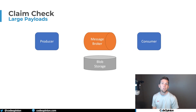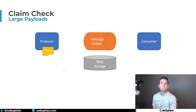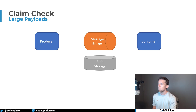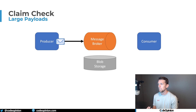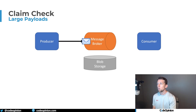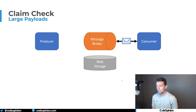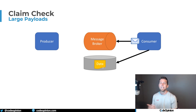So how do we deal with this? The claim check pattern is what we're going to use. Instead of creating a really large message, our producer is going to take that data and push it to some file or blob storage. Once we do that, we have an identifier — could be a URI or a file path depending on your blob storage — that we can put within our message. So instead of putting the data in the message, we put a pointer to where that file is. When our consumer processes that message, it reaches out to that same blob storage to get the data using that pointer. This keeps messages small while storing the payload in shared blob storage that both the producer and consumer can access.